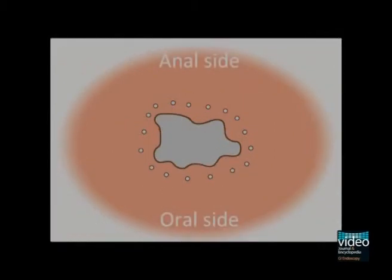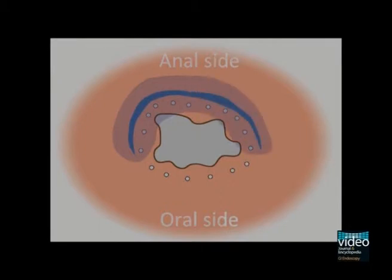In esophageal ESD, we principally start procedures from its anal side. Injection and incision are sequentially made for each quarter of the circumference.